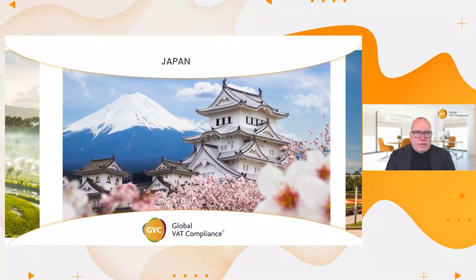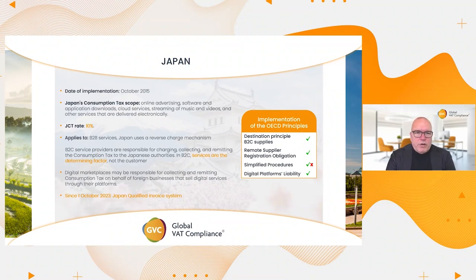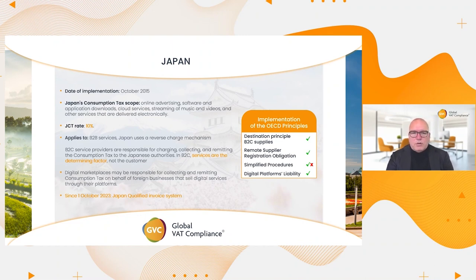Speaking of complications, let's talk about Japan — a very early adopter of the Japan Consumption Tax, or JCT, on digital services. The tax covers a quite broad range: online advertising, software, cloud services, streaming — it's all taxed at a rate of 10%. They tick many of the boxes: there is a destination principle, a remote supplier obligation, procedures are somewhat simple, and platform liability is also coming soon.